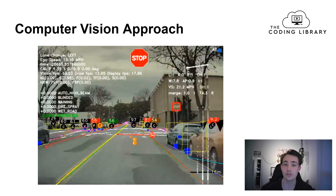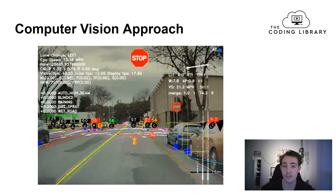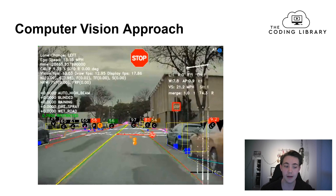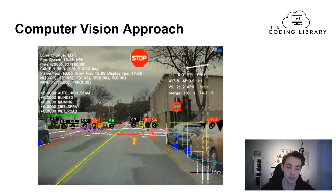The system uses both vision and radar to estimate distances to different objects — we can see these distance numbers displayed relative to the car. It also detects stop signs and predicts the stop line where the car should stop. In this example, it detects the stop sign and the car navigates up to the predicted red stop line.